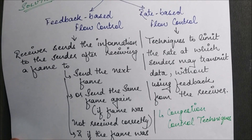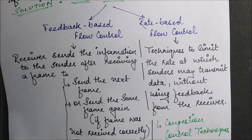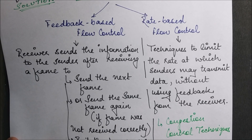Rate-based flow control comprises techniques to limit the rate at which the sender is sending the data. If the sender is sending data at a very high speed, we have techniques under this category to slow down the sender's sending speed — without using any feedback from the receiver.